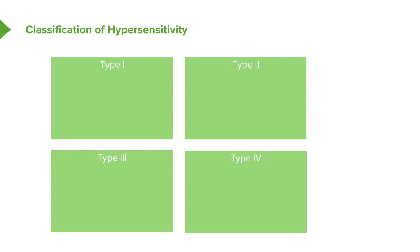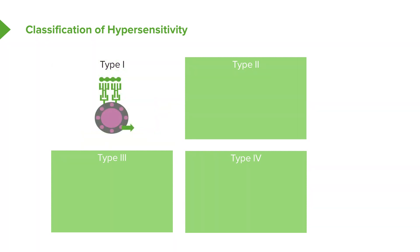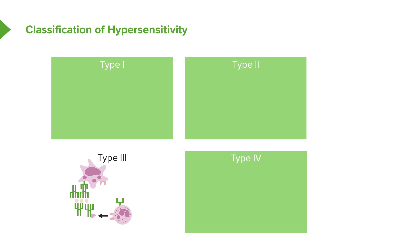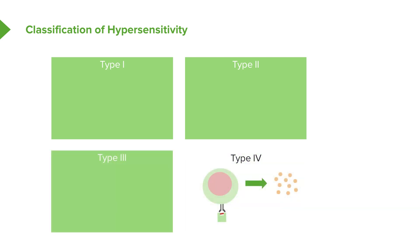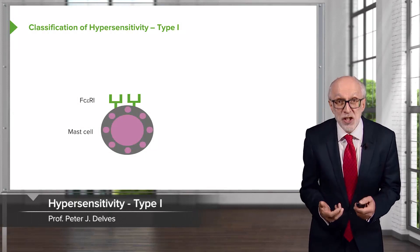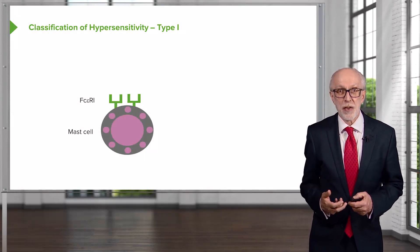We can classify hypersensitivity reactions into one of four different types. Type 1 is IgE-mediated mast cell degranulation. Type 2 is cytotoxic antibodies against cell surface antigens. Type 3 is immune complex mediated hypersensitivity. And type 4 is delayed type hypersensitivity mediated by T cells. Note that types 1, 2, and 3 are all mediated by antibody, whereas type 4 is mediated by T cells.